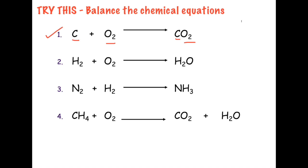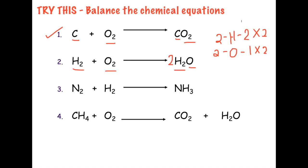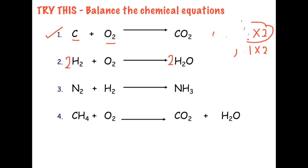The second equation: we have two hydrogen on the reactant and two hydrogen on the product side. We have two oxygen on the reactant but only one on the product side. So to balance oxygen, we multiply the product by two, which also affects H2. Placing 2 before H2O makes four hydrogen, so we multiply the reactant side by two as well. The balanced equation is 2H2 + O2 → 2H2O.